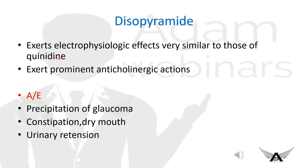Disopyramide exerts electrophysiologic effects very similar to those of quinidine, so it can be said to be better tolerated than quinidine. It also exerts prominent anticholinergic actions and has negative inotropic actions. Adverse effects include precipitation of glaucoma, constipation, dry mouth, and urinary retention.